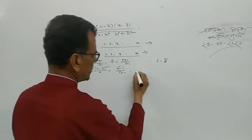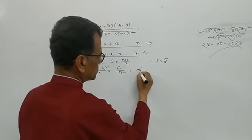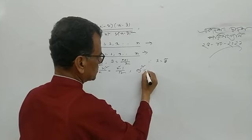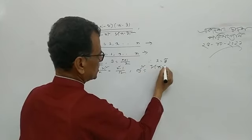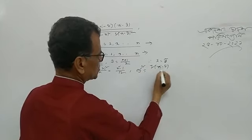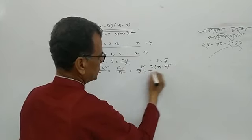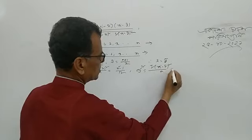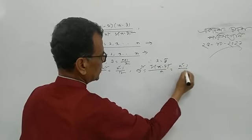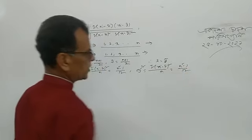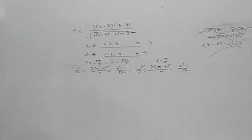And sigma squared y: sigma squared y equals summation (yi minus y-bar) whole square divided by n, which also equals (n squared minus 1) divided by 12. Why? Because these are also the first n natural numbers.